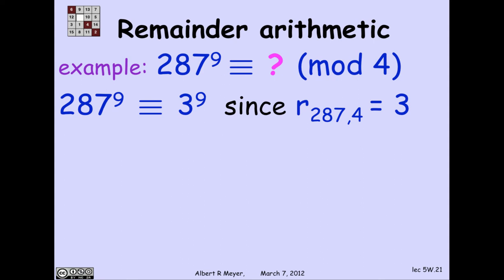And that means that 287 to the 9th is congruent mod 4 to 3 to the 9th. So already I got rid of the three-digit number at the base of the exponent and replaced it just by a one-digit number 3. That's progress. Well, we can make more progress because 3 to the 9th can be expressed as 3 squared squared squared times 3, right?